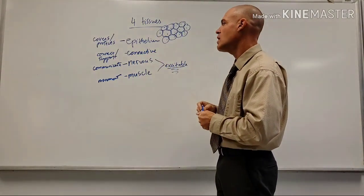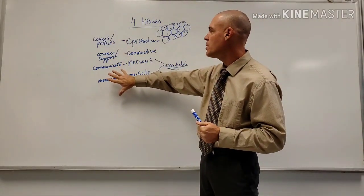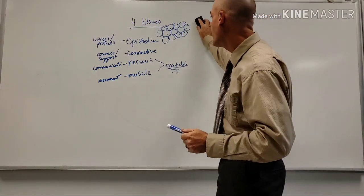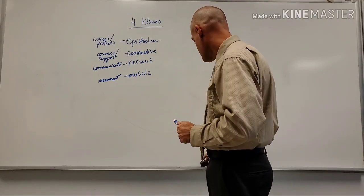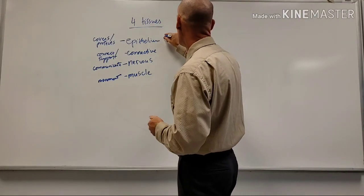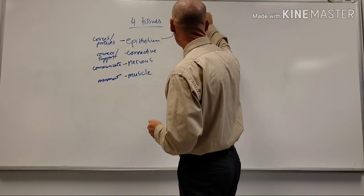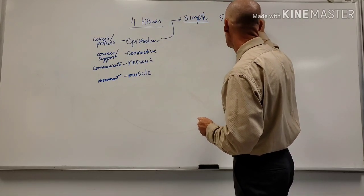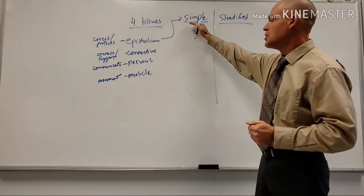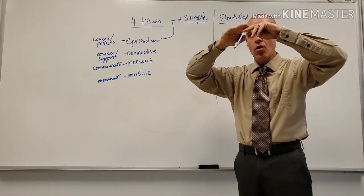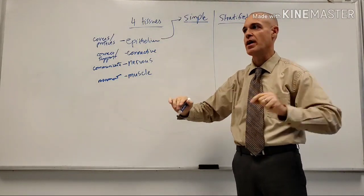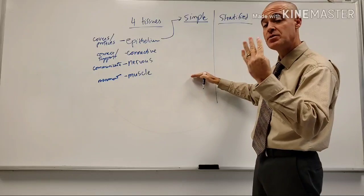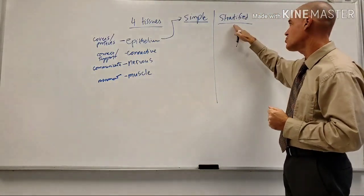Let's categorize the epithelium types. Under epithelium we have two columns: simple and stratified. Simple just means one row of cells - all those cells touch the basement membrane. We're going to have four types of simple epithelium, and we're also going to have four types of stratified. Stratified just means two or more layers.